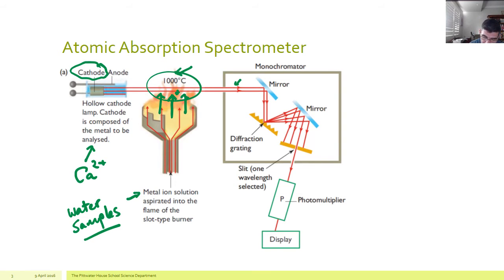So the light passes through from the cathode. It passes through the vaporized gases. Some of that energy has been absorbed at particular wavelengths. And then through a series of mirrors and diffraction gratings, a specific wavelength will emerge, just the one. And that's why it's called a monochromator, which means one color, basically.